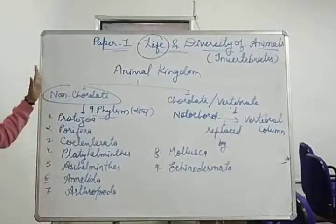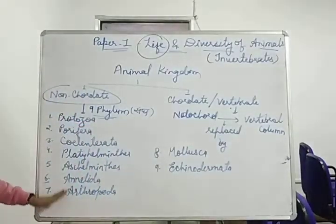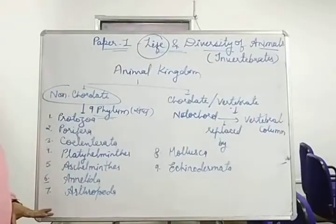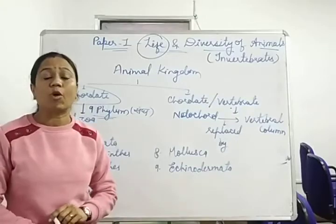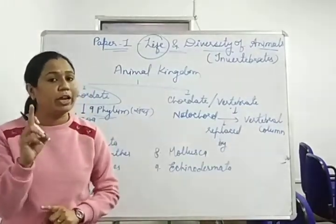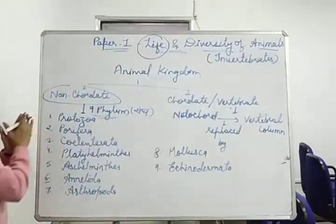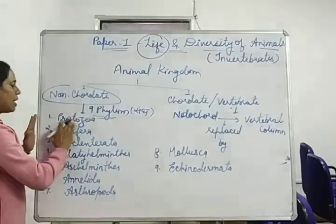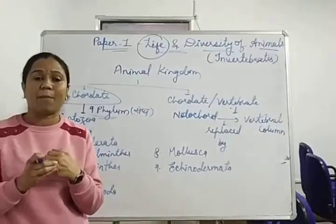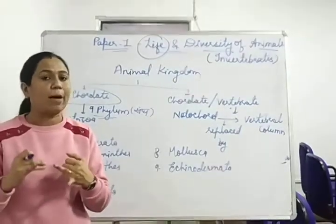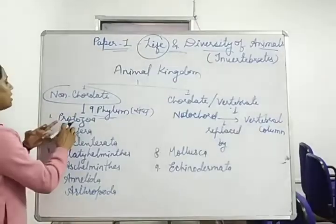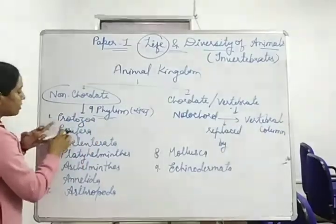All these phyla, the animals included in them, are non-cordates — that means in none of them is notochord found. Now, the starting animals are Protozoans — that means single-cellular animals. So here come Amoeba, Paramecium, Euglena — they all come under Protozoans.